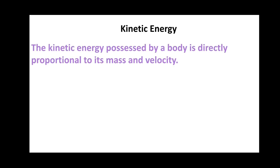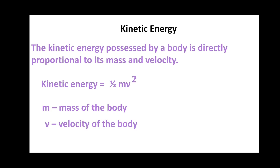The kinetic energy possessed by a body is directly proportional to its mass and velocity. Directly proportional means, as the mass or velocity of a body increases, then the kinetic energy of a body also increases. Mathematical formula for kinetic energy of a body is, kinetic energy is equal to half mv square. m is the mass of the body and v is the velocity of the body.